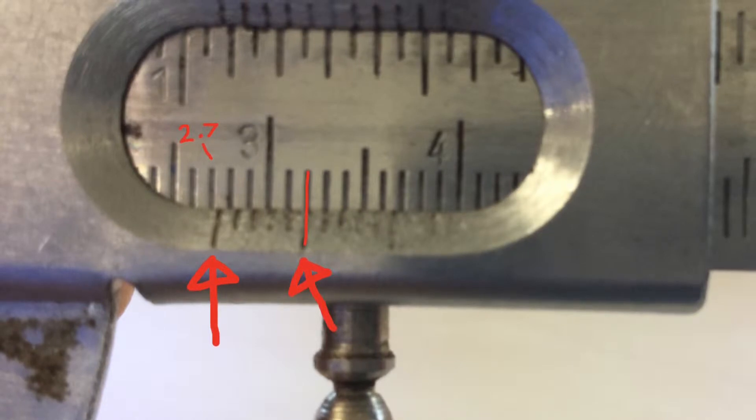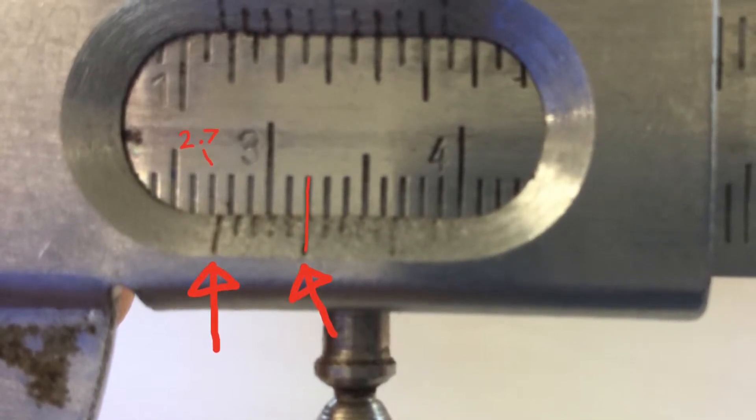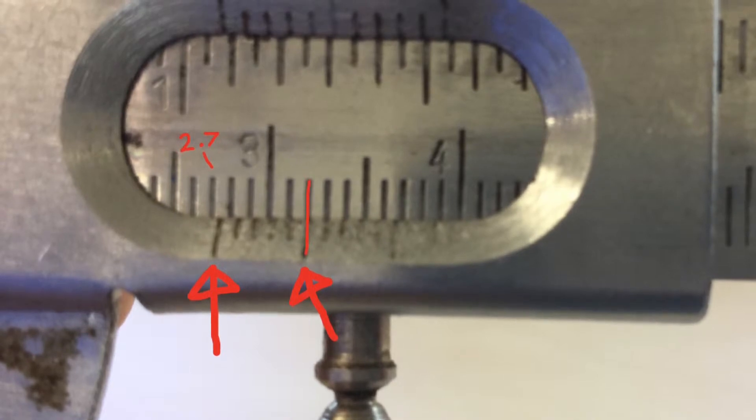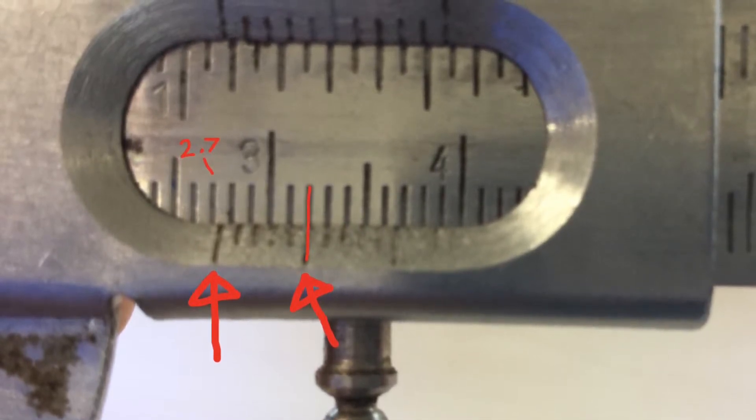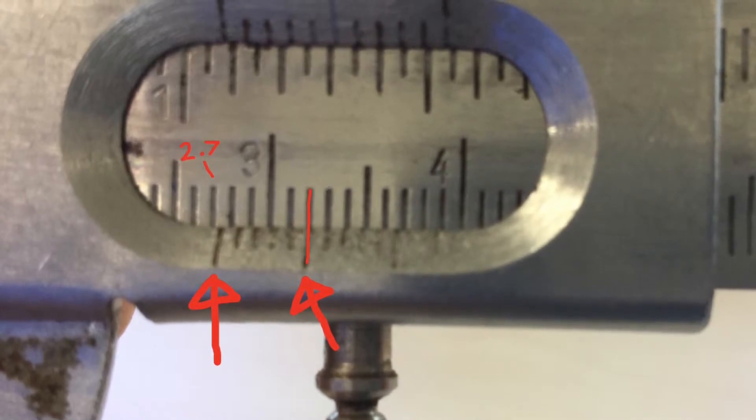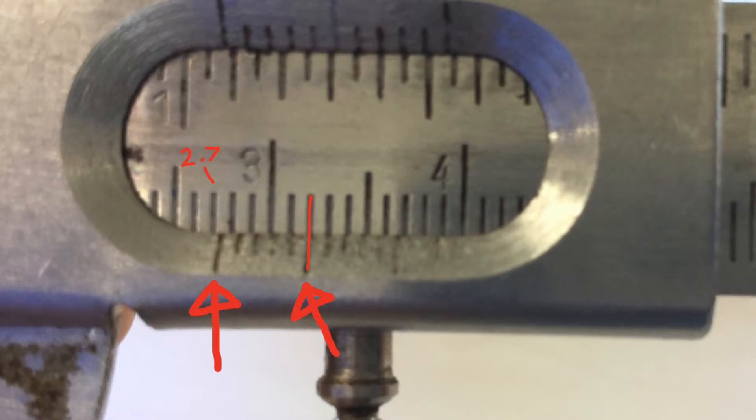You look at the first bottom line and where it lines up. On this picture, you can see that it is just past the 2.7 centimetre mark. This means that this measurement is 2.7 something, and that's what the other lines are for.